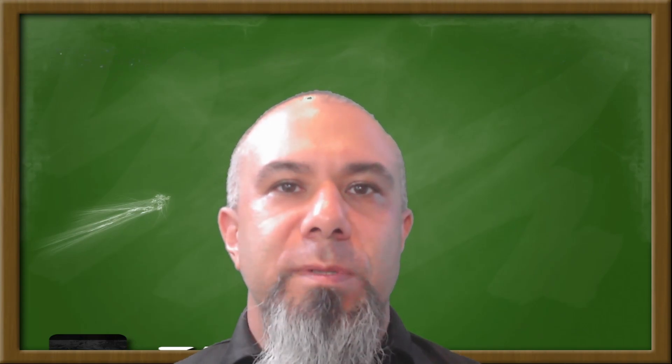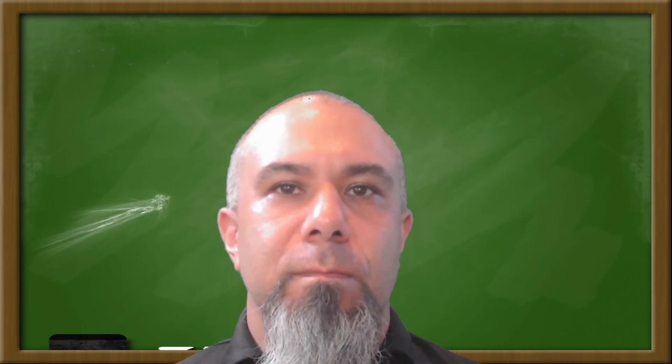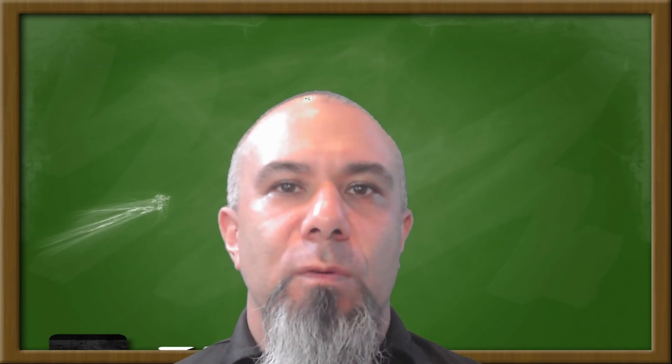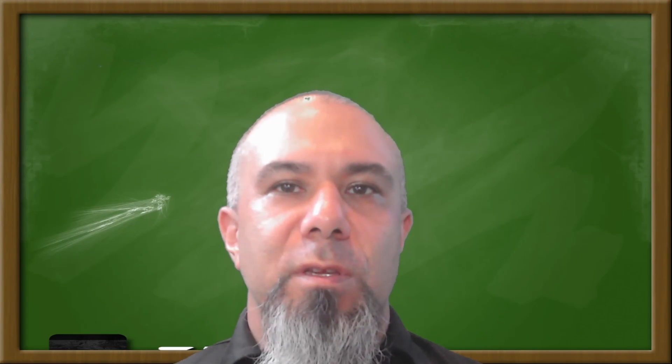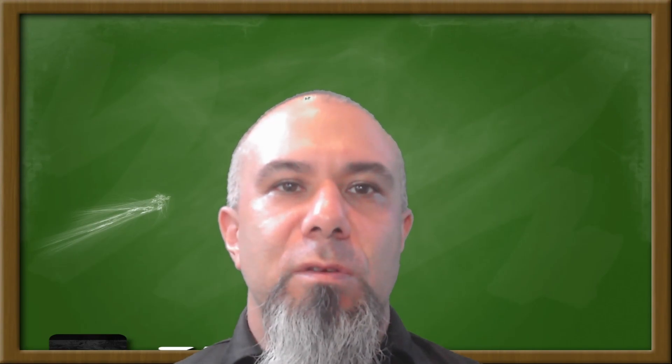In China, all the years have an animal symbol. There are twelve symbols. For example, the year of the rabbit was from 1999 to 2000. The year of the sheep was from 2003 to 2004.